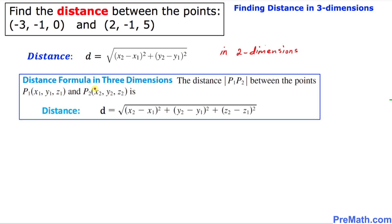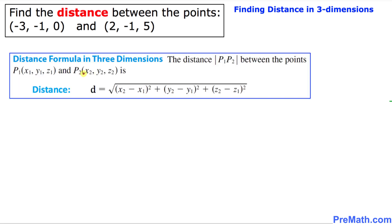And here is the distance formula in three dimensions. As you can see, this is just the extension of the formula in two dimensions. They look a lot similar. Thus the distance formula in three dimensions is simply d equals the square root of (x₂ minus x₁) squared plus (y₂ minus y₁) squared plus (z₂ minus z₁) squared.